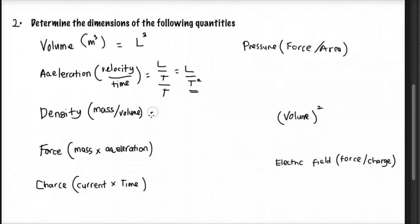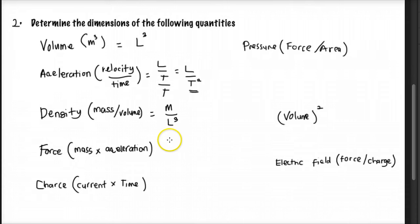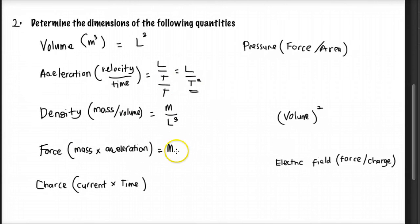For density, it is mass over volume. Mass is M and volume is L³, so the dimension is M over L³. Next is force, which is mass times acceleration. Mass is M and acceleration is L over T², so force is ML over T².